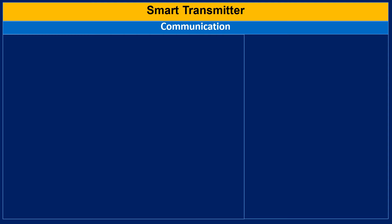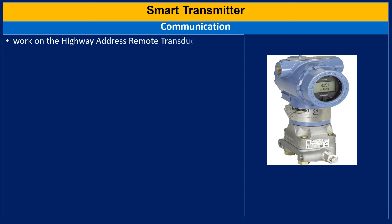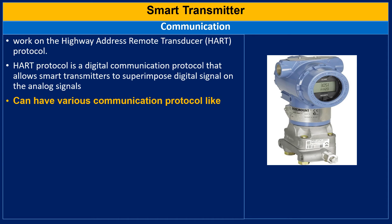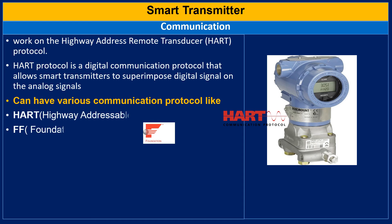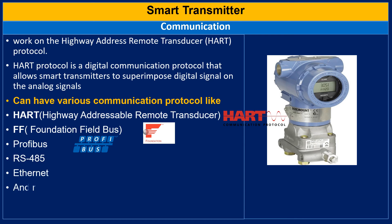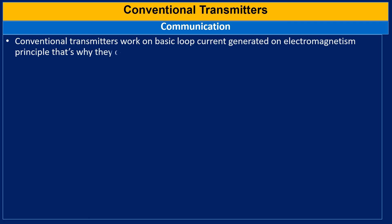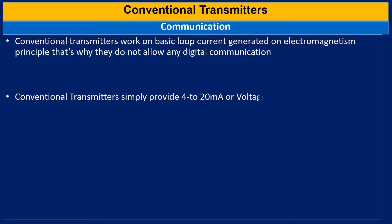Comparing both transmitters for communication: smart transmitters work on the Highway Addressable Remote Transducer, or HART protocol. The HART protocol is a digital communication protocol that allows smart transmitters to superimpose digital signals on analog signals. Smart transmitters can support various communication protocols like HART, Foundation Fieldbus, Profibus, RS-485, Ethernet, and many more. Conventional transmitters work on the basic loop current generated on the electromagnetism principle, so they do not allow any digital communication and simply provide a 4 to 20 mA or voltage signal with no other communication protocols.